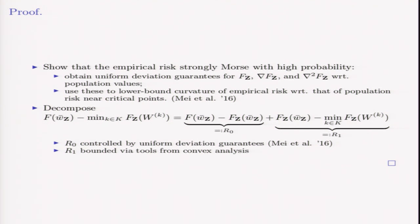Then by adding in and subtracting out the population and empirical risk and decomposing into these two terms, where the first term is controlled by the uniform deviation guarantees, and the second term we bound via standard tools in convex analysis given by Nesterov and friends.